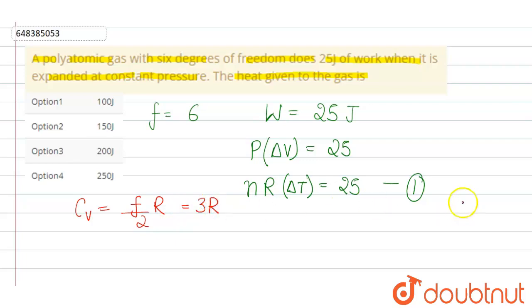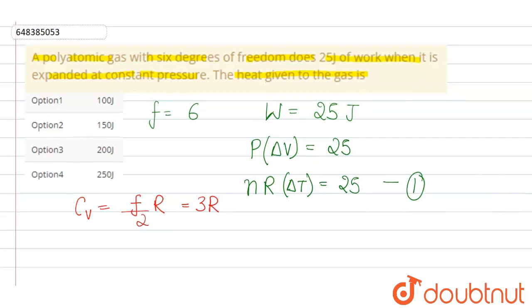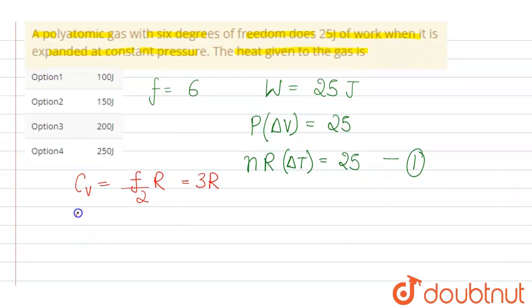Now we know the formula for Cv is equals to f by 2 R, which means it will be equals to 3R. Now we have to find delta Q, so to determine delta Q, first we find delta U. Delta U will be equals to n Cv delta T, and Cv can be written as 3R delta T.